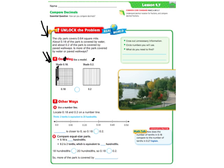And then this is a tenths model, and we'd shade in two tenths. Now we can see from this model, just by looking, that the two tenths is greater than the eighteen hundredths, because it's got two rows completely filled in. The eighteen hundredths only has one row filled in, plus almost a second row.